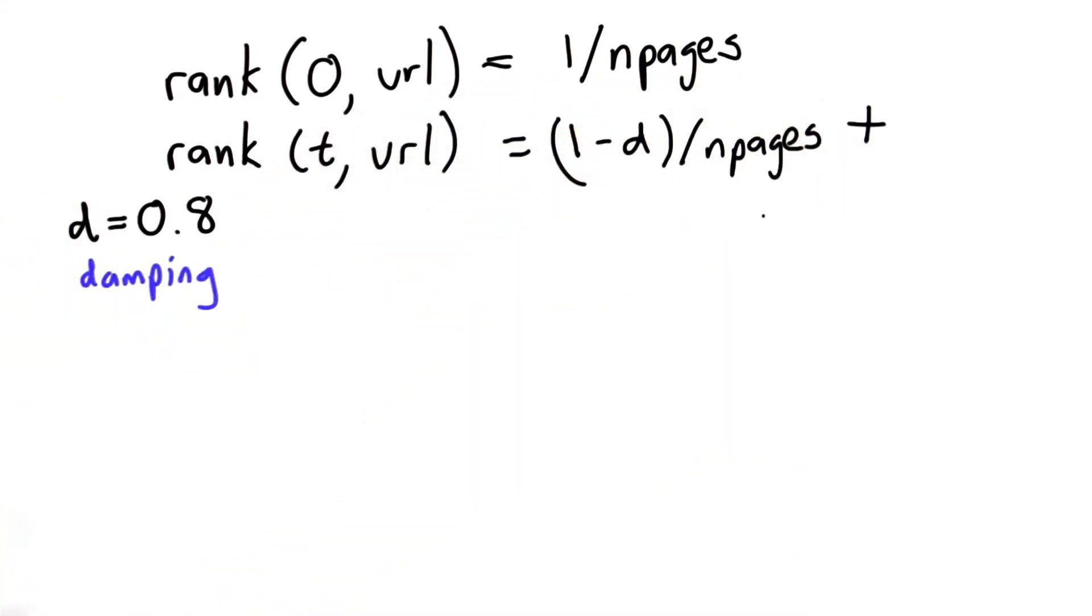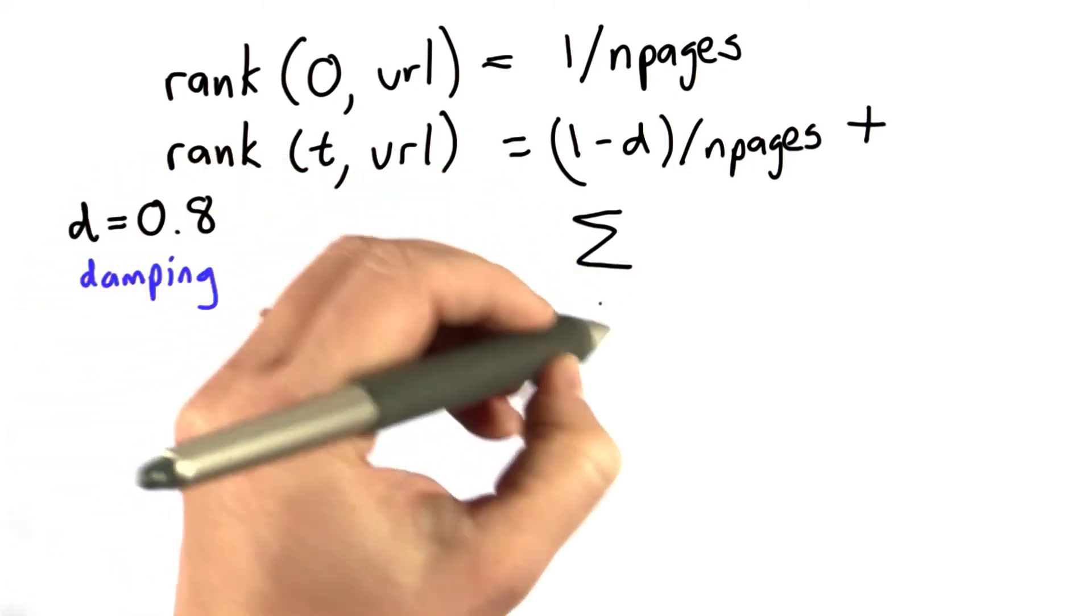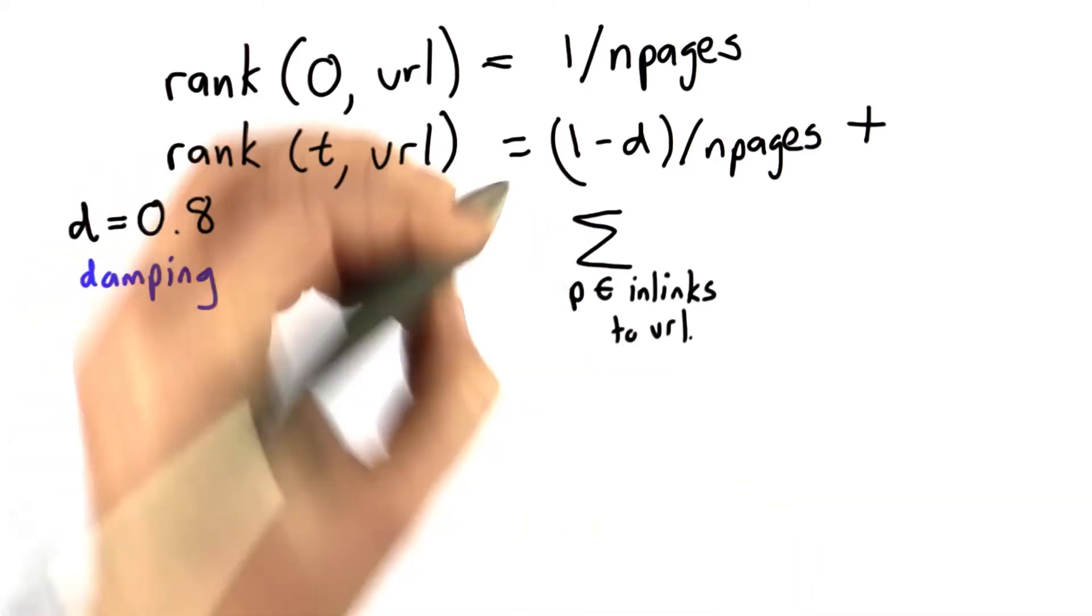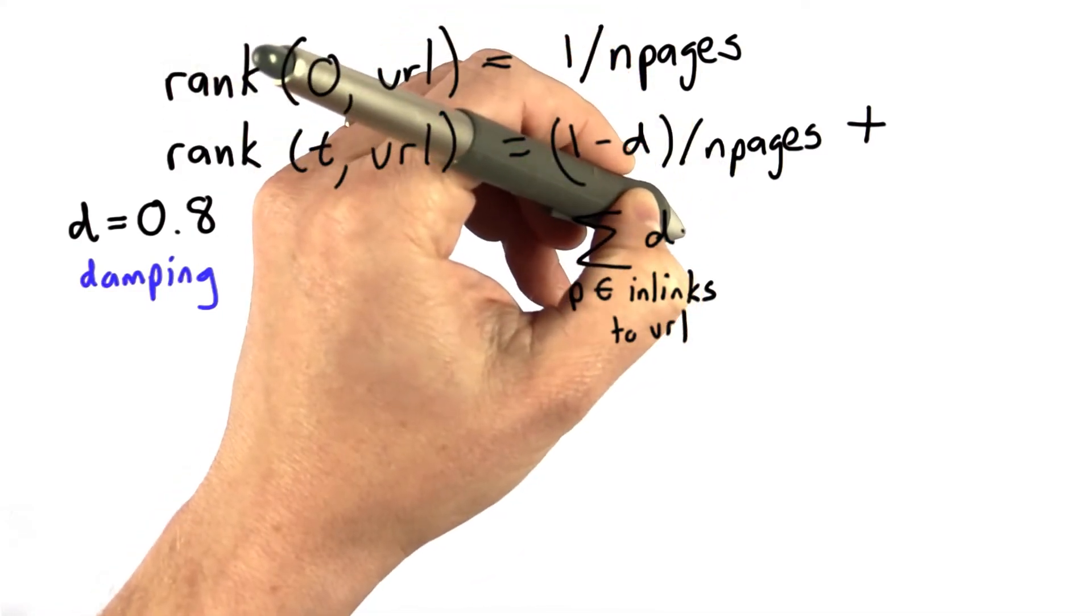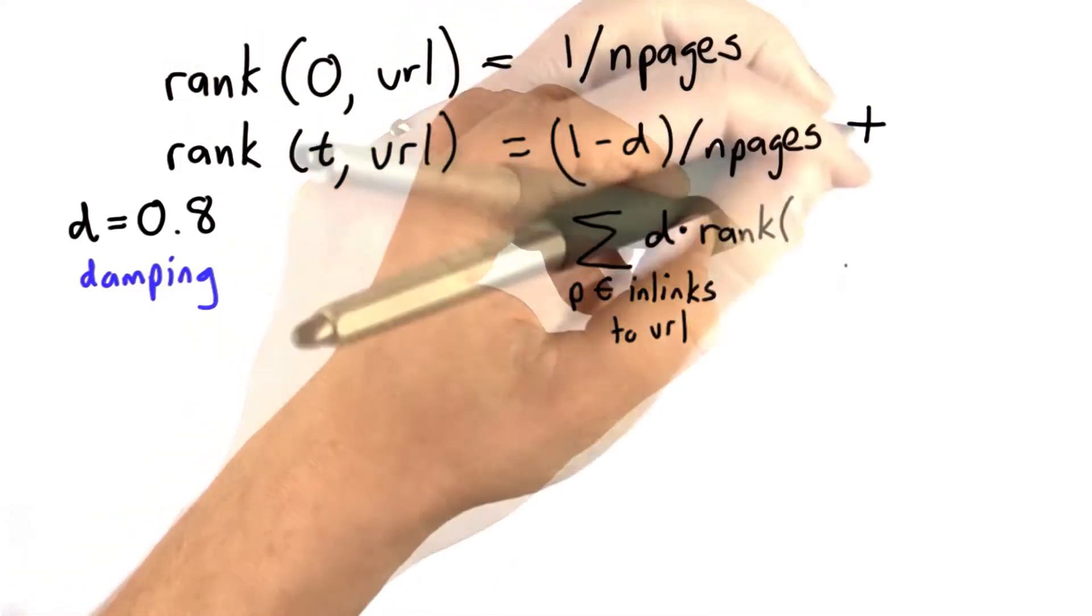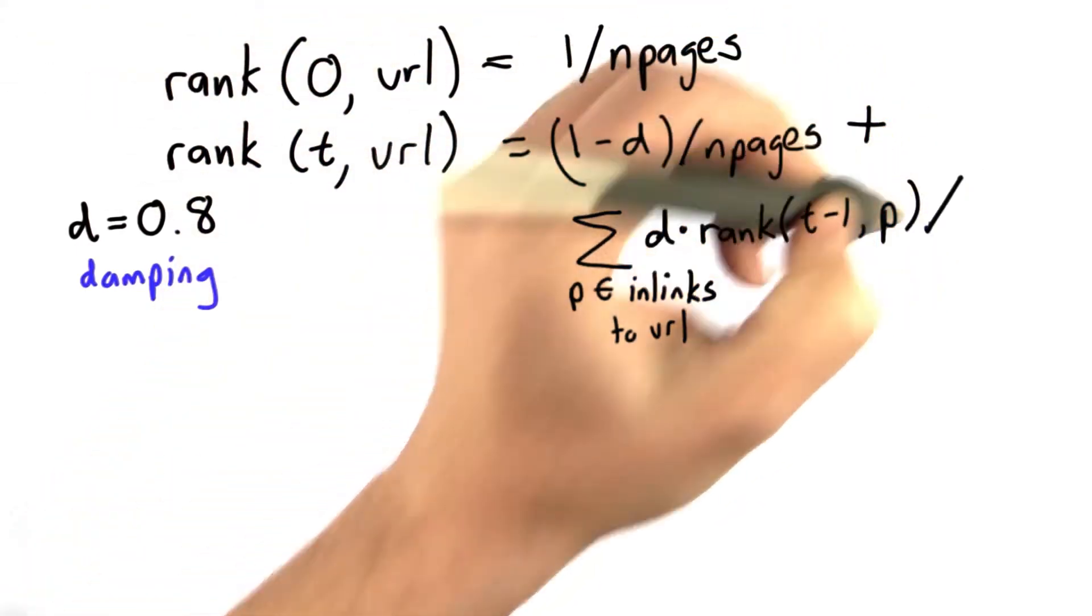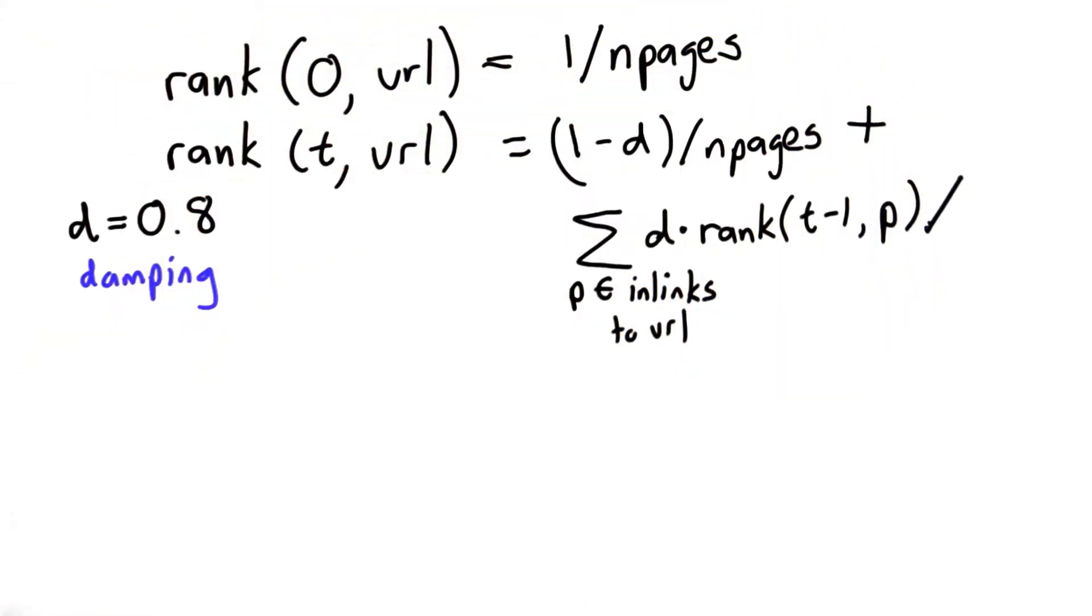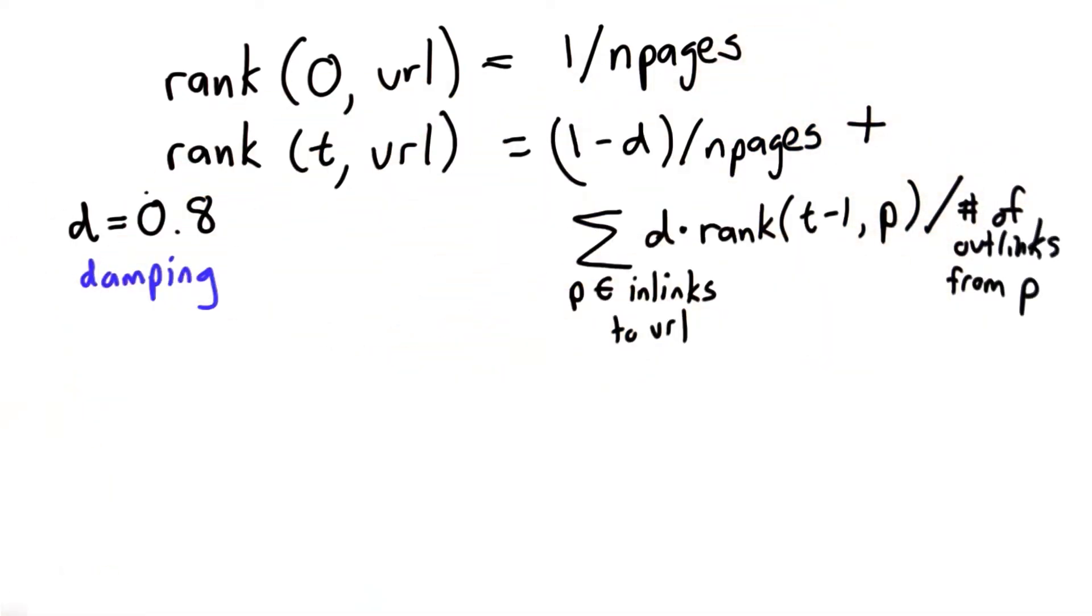We add to that the sum that we get of all the ranks, all the pages that link to this URL. We add up d times the previous iteration, so it's going to be d times rank on step t minus 1 of that page, but we want to divide that by the number of outlinks from p. So it's starting to look more like Python code. We want to simplify it a little bit before we get to Python code.